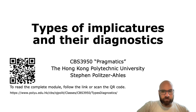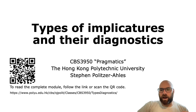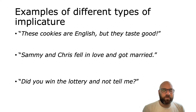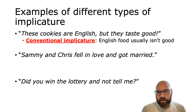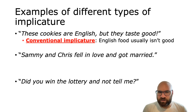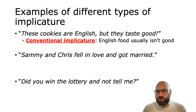Let's look at each of these utterances. First, if someone says 'these cookies are English, but they taste good,' literally that just means two things: the cookies are English, and the cookies taste good. But it also has a little extra meaning. Because of the word 'but,' which signals a contrast, the extra meaning is that English food doesn't normally taste good — you wouldn't expect being English and tasting good to go together. This meaning is what's called a conventional implicature.